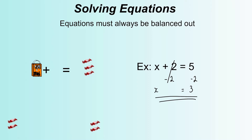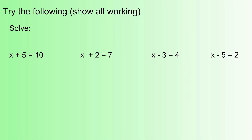Let's have a look at how that works with a few more examples — this time without the diagrams. We've got four examples here. If you want to try them, pause the video, copy them down and have a go, then play the video again when you want to see the answers. The first one: x plus 5 equals 10. We're going to take away 5 from both sides, taking away 5 from the left hand side and 5 from the right hand side. That gives us x on its own, and 10 take away 5 is 5, so x equals 5.